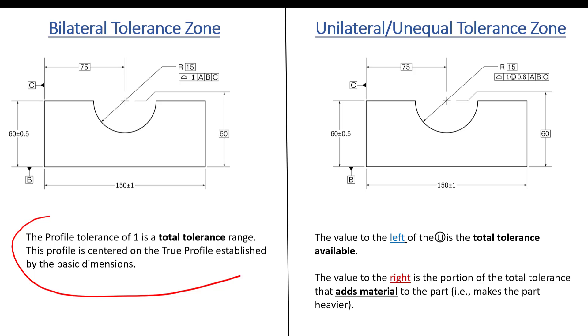So down here on the bottom, if you look at the statement here for profile, it says the tolerance of one is a total tolerance range. So what we see here in the block, and I've said this in many of the other videos, and you should have learned this in the course, or at least if you're up to this point in profile, you've learned it with all of the other tolerances, that whatever's stated in there after the geometric tolerance is the total tolerance.